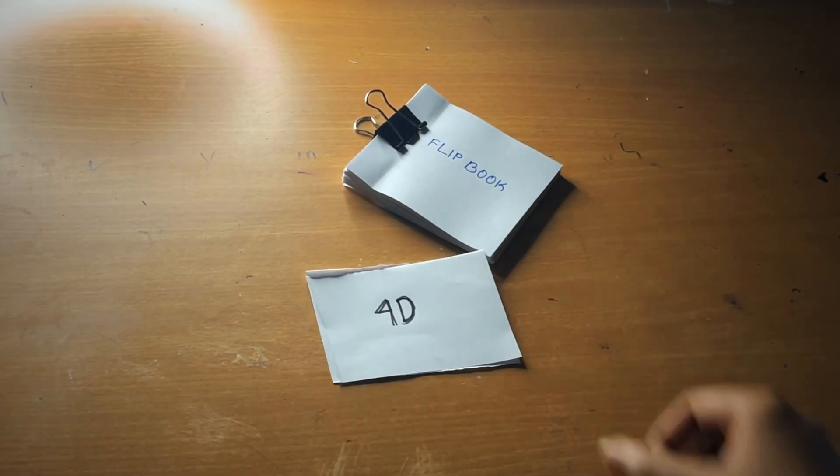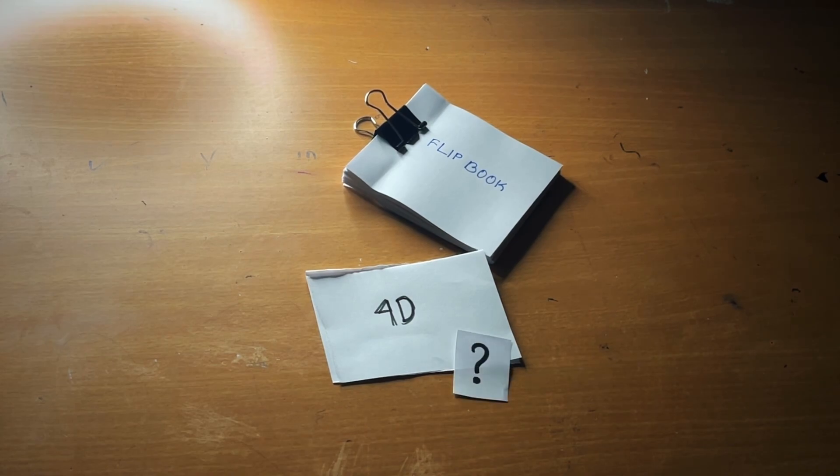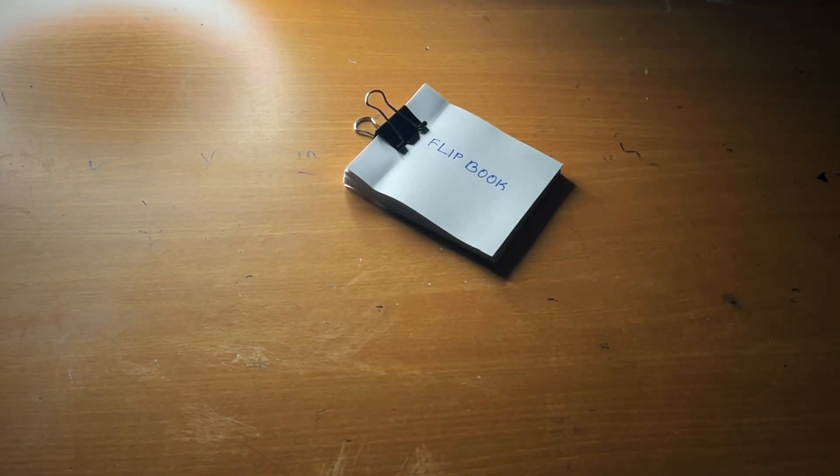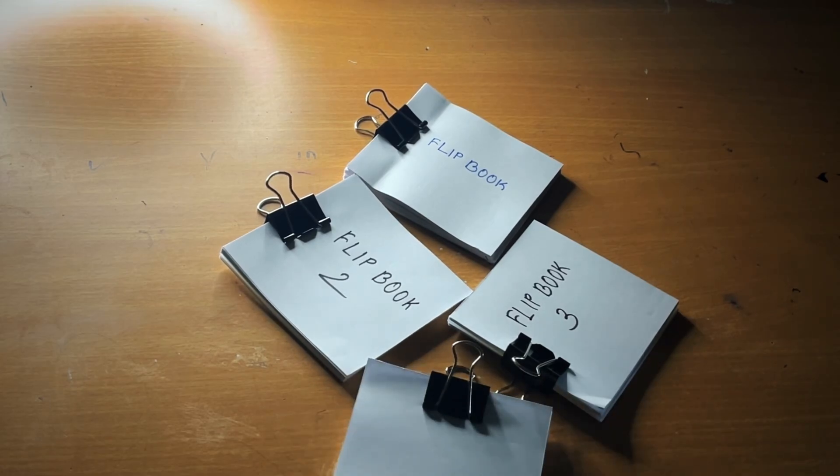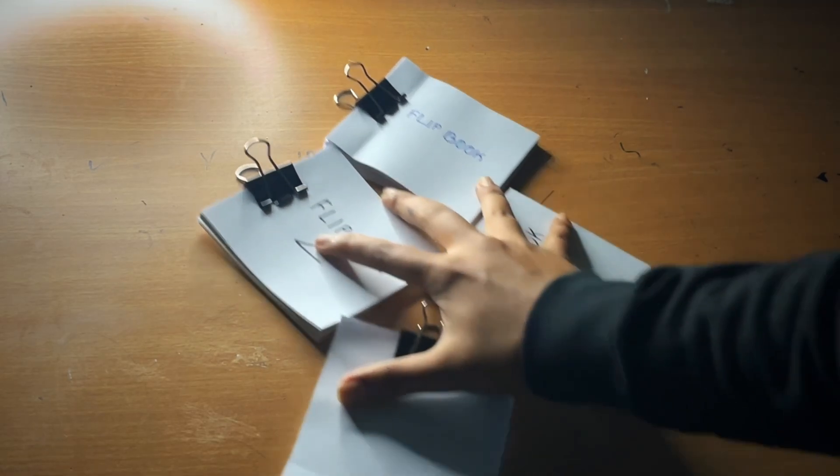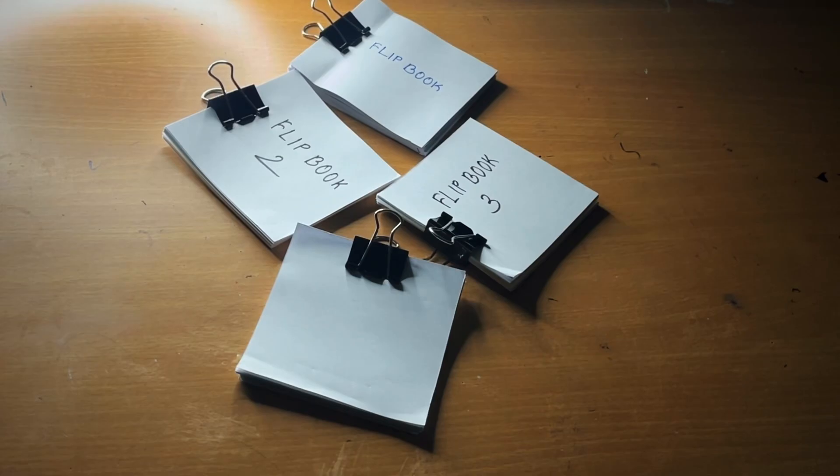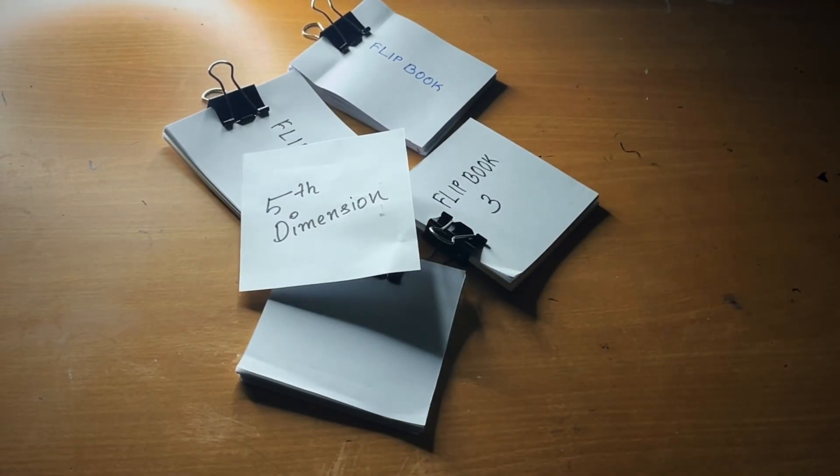Now the big question: if 3D variation created 4D spacetime, then what happens when we introduce variation in spacetime itself? Boom. Multiple 4D block universes. Instead of a single fixed 4D reality, now we have an entire set of different spacetime continuums. This is what we call the fifth dimension.